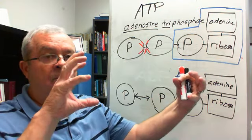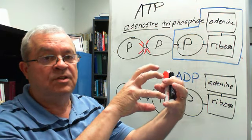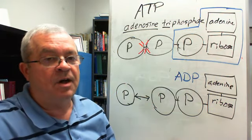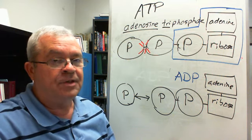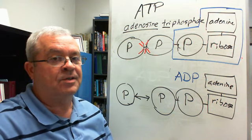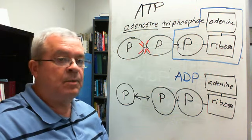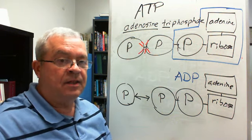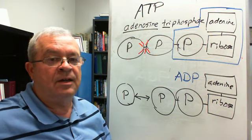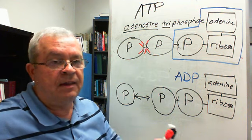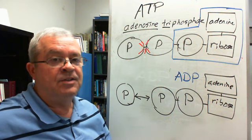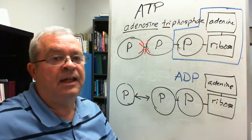And so, phosphate tacked on, energy stored. Phosphate pulled off, or taken off, energy released. That's how it works. Well, that's the basics. Let's shut this one down, and recap, and then see how that works in general, in a cell, in what's called an energy cycle.